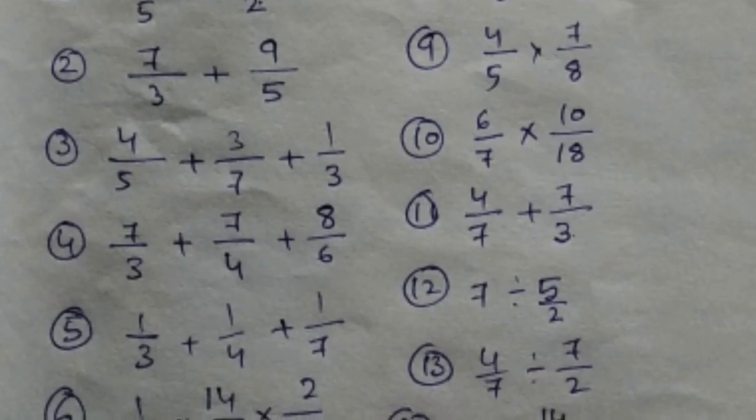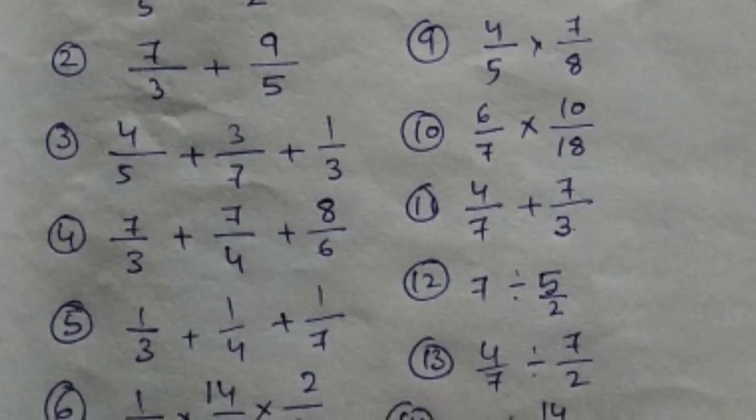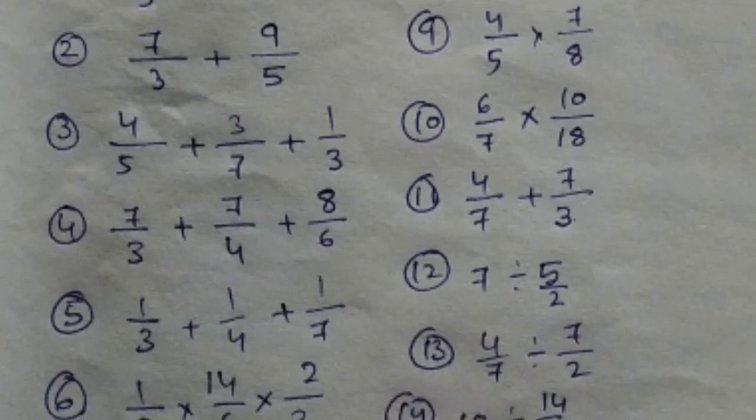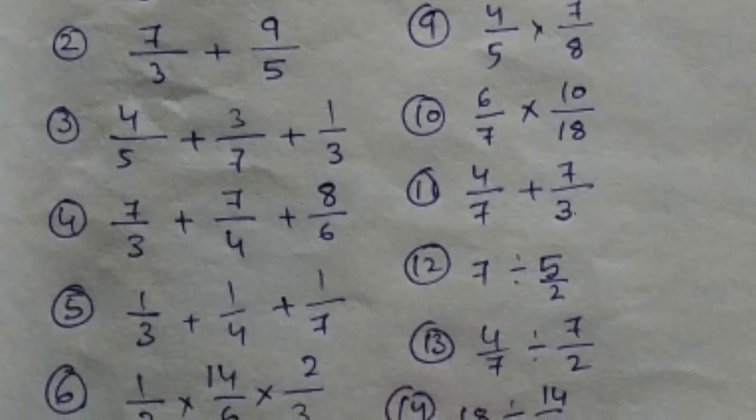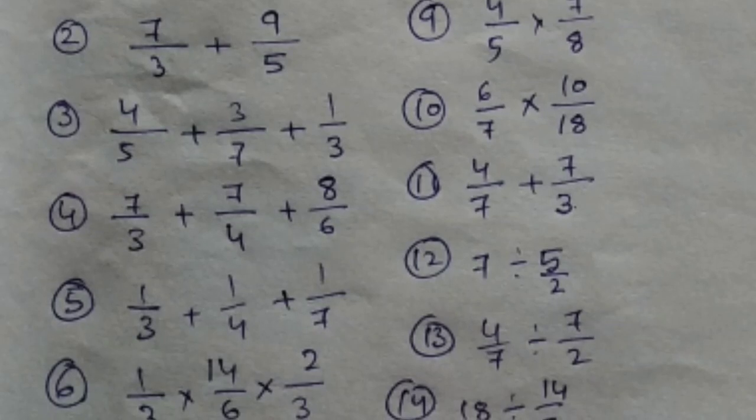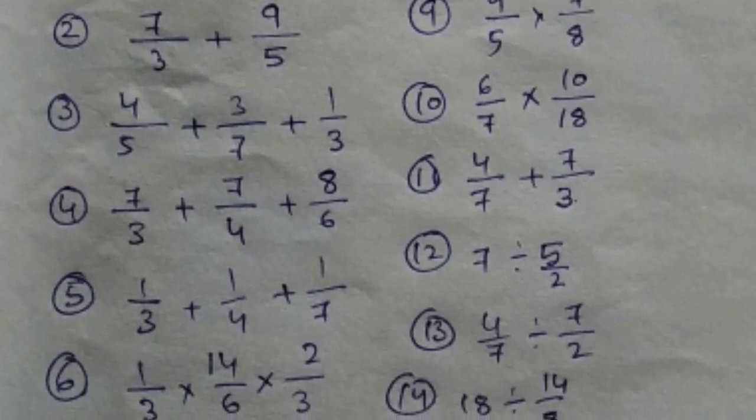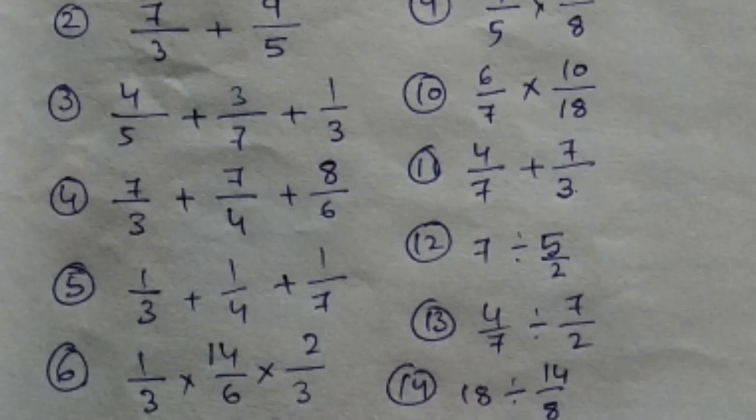Number 8: 7 by 3 minus 4 by 5. Number 9: 4 by 5 into 7 by 8. Number 10: 6 by 7 into 10 by 18. Number 11: 4 by 7 plus 7 by 3.